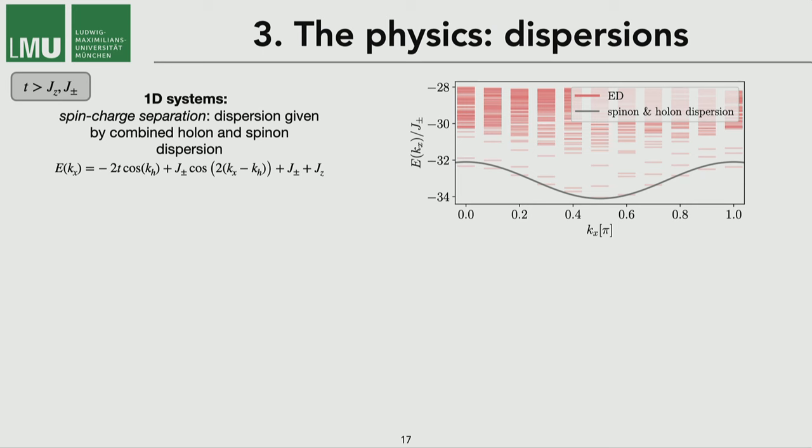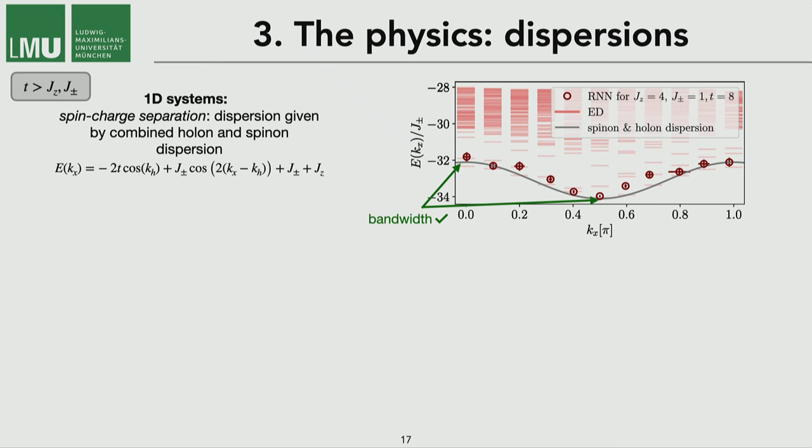Let me very quickly show you some results that we obtain with this method. The first system that I had a look at was a one-dimensional system in 1D systems and in this limit of T larger than J. We get spin charge separation, which means that our system basically consists of charge excitations and spin excitations. And consequently, the full dispersion is just given by a combination of both. And if we do the not so complicated math here, we get the gray line. But I'm also comparing to exact diagonalization results. And the method that I was presenting gives us the following results. So we see that the agreement is not perfect, but at least we can capture some of the main features of it. And in particular, the bandwidth is captured correctly.